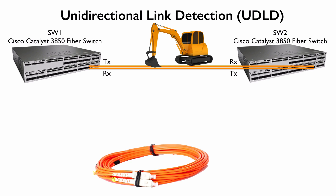Switch SW1 could still transmit traffic and would not know if that traffic got dropped. SW2 would not know that the traffic got dropped because it never knew it was getting the traffic. SW2 could send traffic and it's being received by SW1. How are these switches to know that something's wrong?